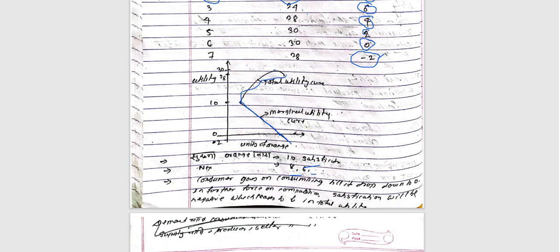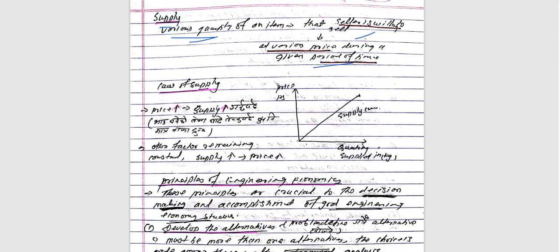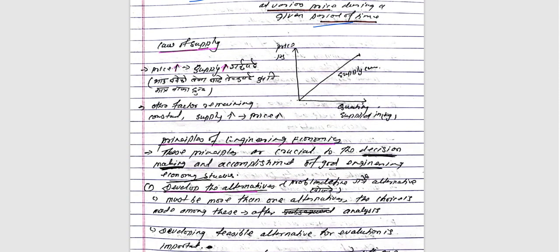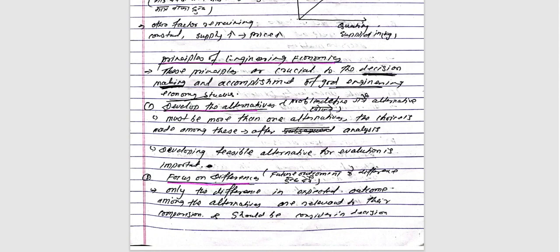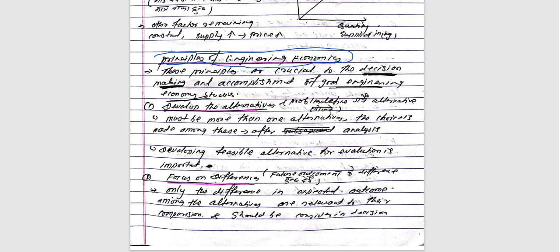Supply is the seller's perspective. If the price is higher, sellers are willing to supply more. The price of supply determines how much is offered to sell. This leads into the principles of engineering and economics.